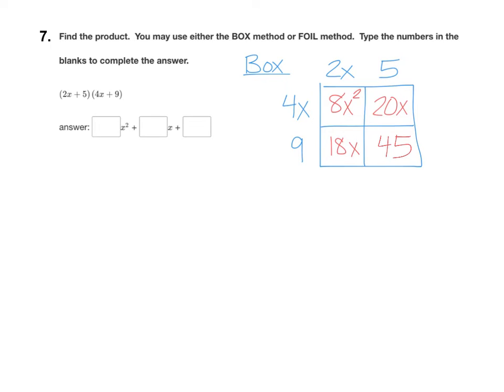8x squared plus 20x plus 18x plus 45. Remember that we want to combine the like terms together. The like terms, I'm going to circle those up and combine them right in the box. 20x and 18x can go together. 20 plus 18 is 38. So your final answer would be 8x squared plus 38x plus 45.